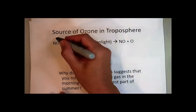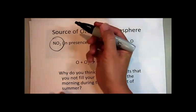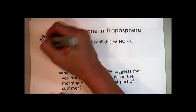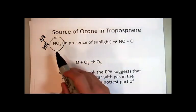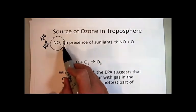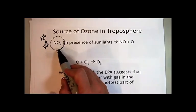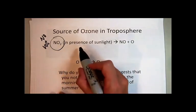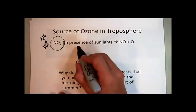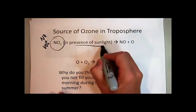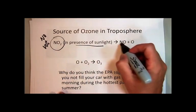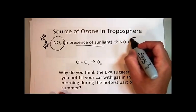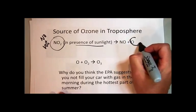The NO2 is produced, first of all, from NO and VOCs. Once we get the NO2 in the atmosphere, it's there. But then also, what happens to the NO2 in the presence of sunlight is the NO2 is broken down into a nitrogen monoxide and a single oxygen atom.